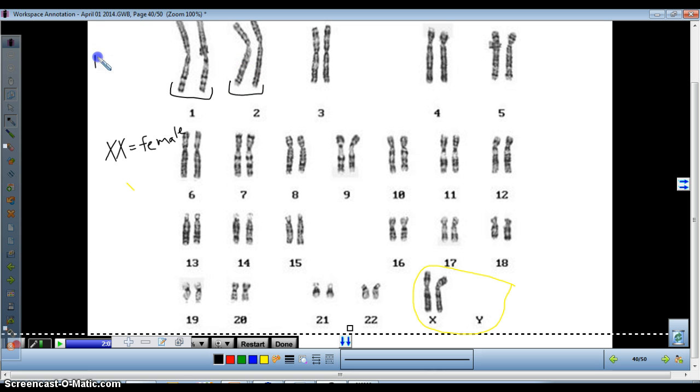Remember that the diploid number of chromosomes in a human cell is 46. The number of chromosomes in a haploid, half of 46, would be 23. 23 pairs make a diploid.